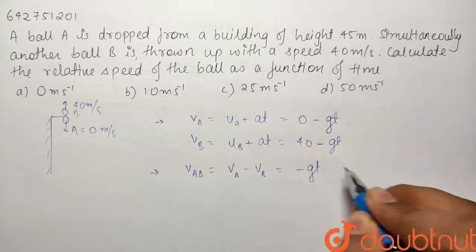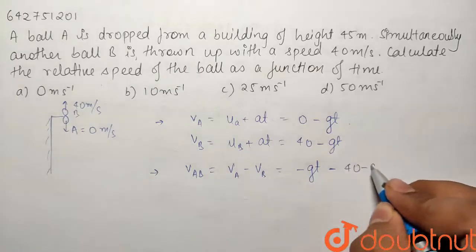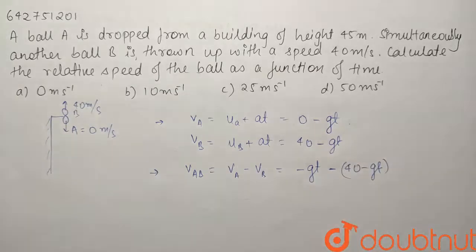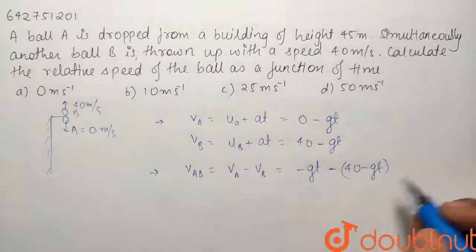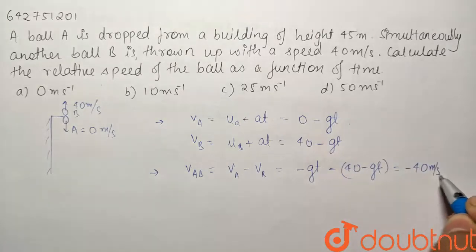It is equal to minus Gt minus Vb. What is minus Vb? It is equal to minus of 40 minus Gt. So if I solve, both the Gt terms cut out and it comes out to be equal to minus 40 meter per second.